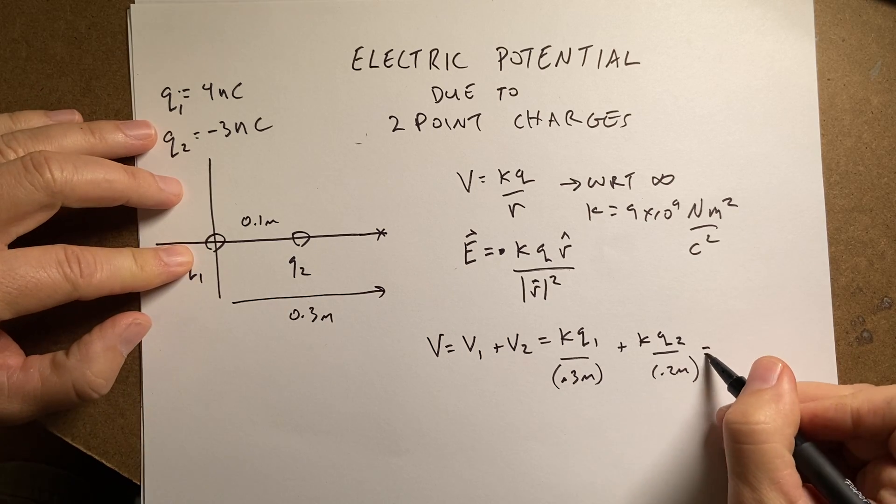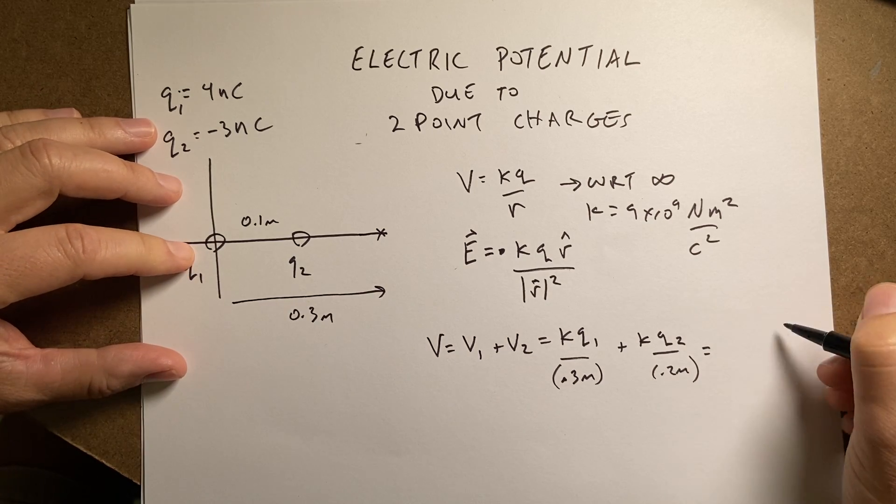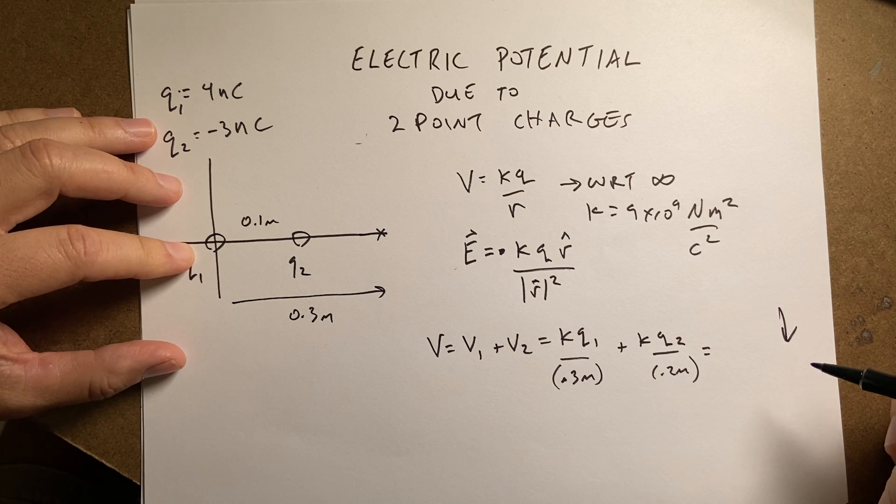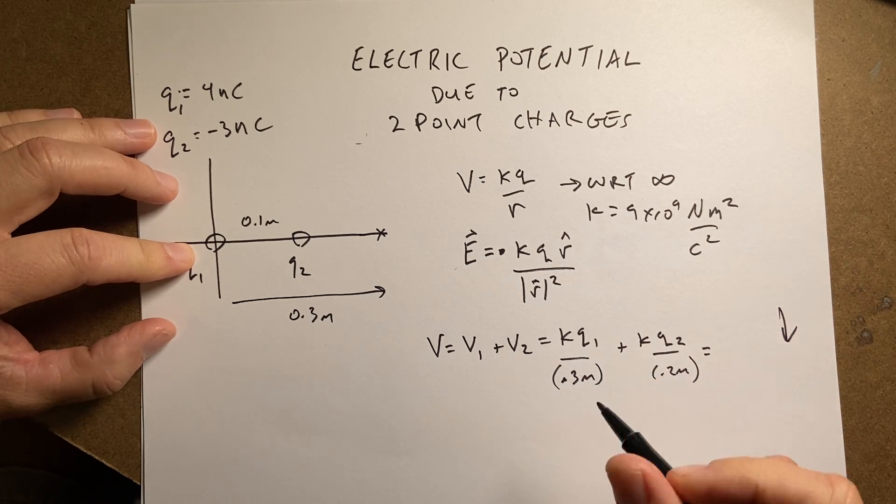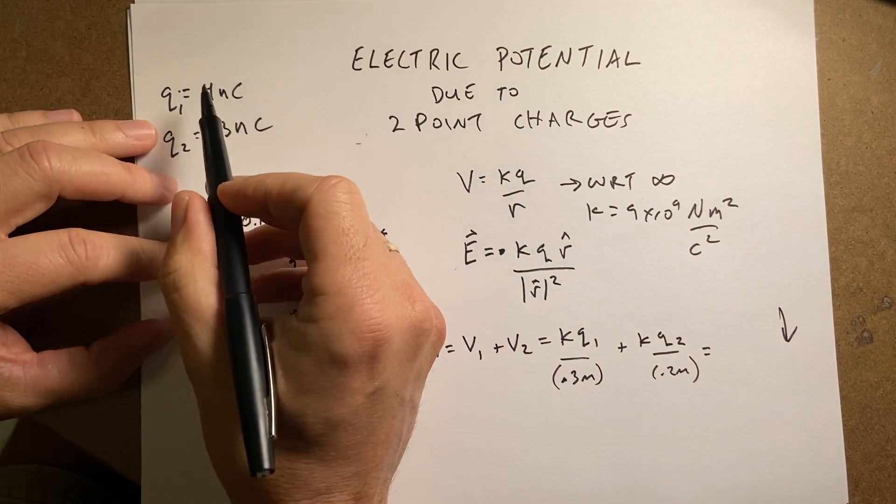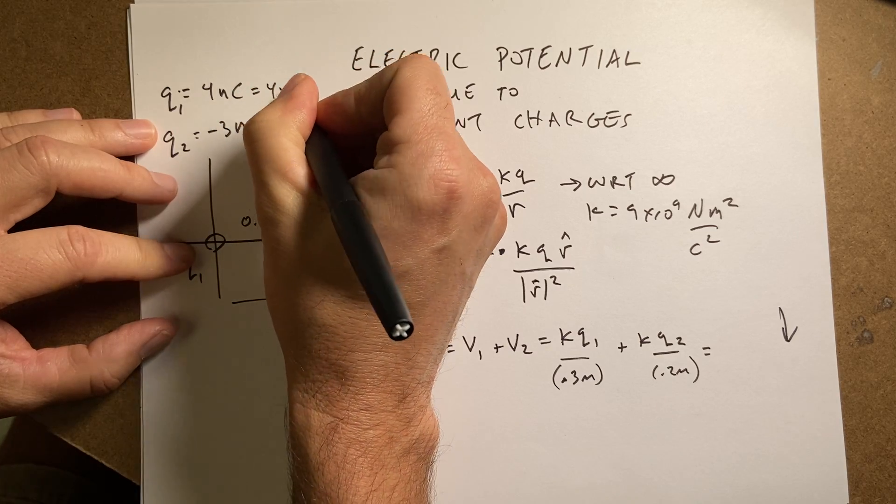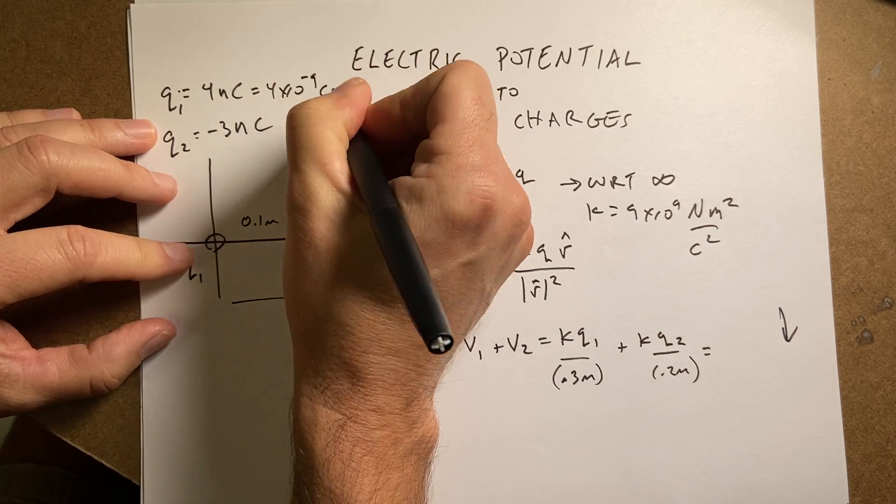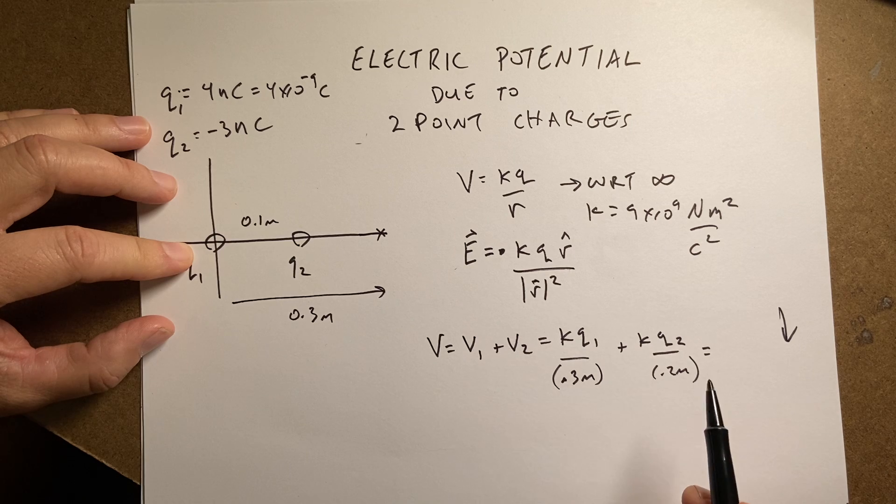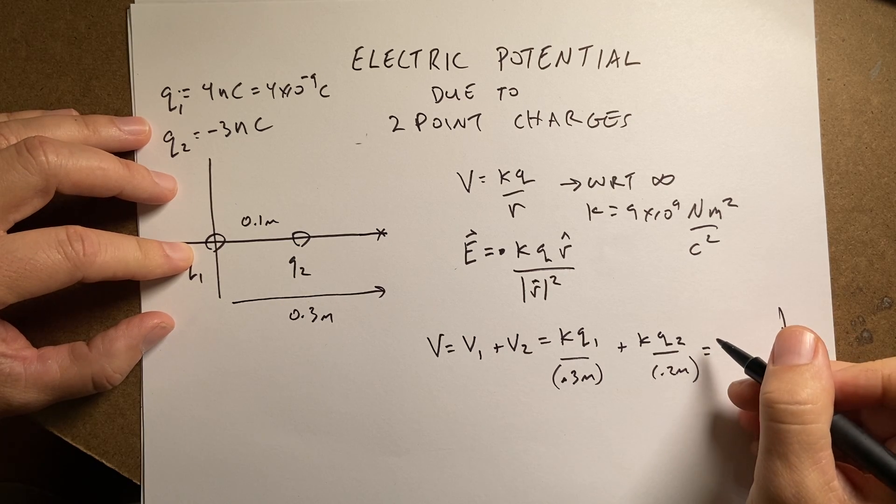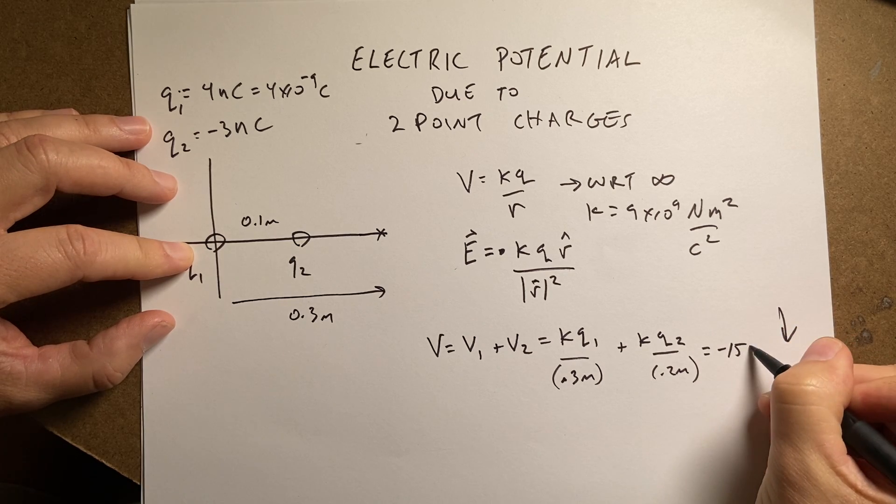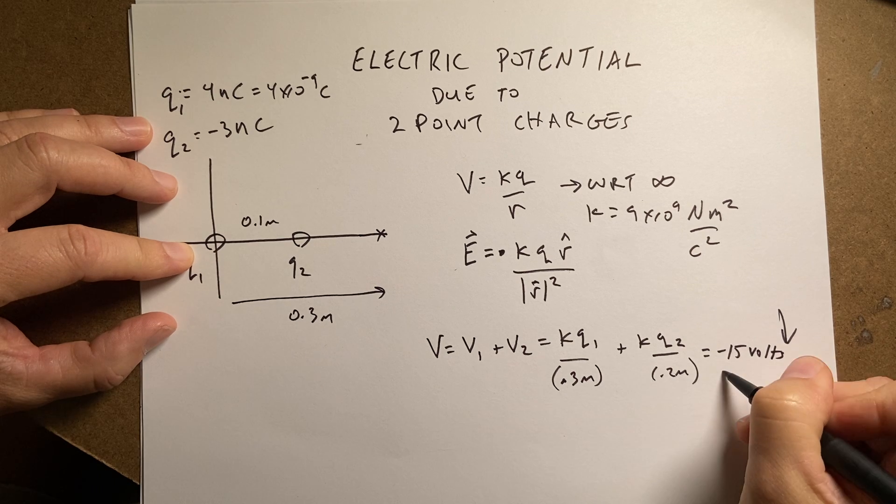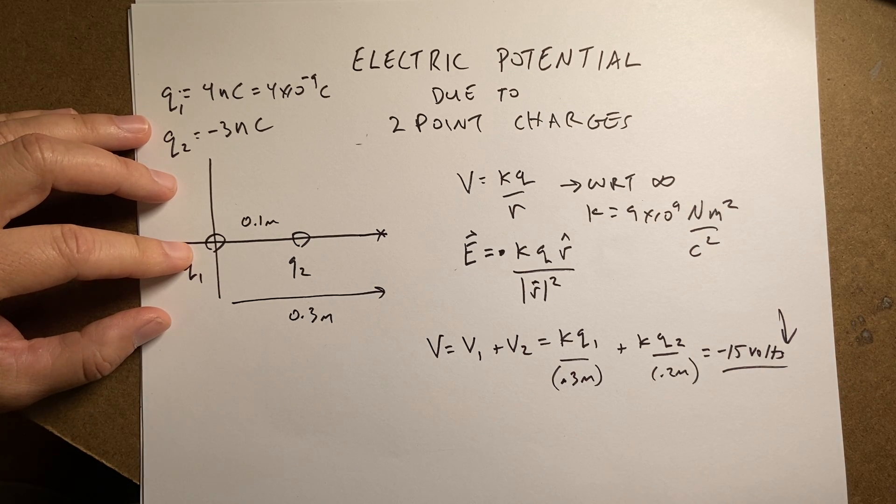And so if you put this in, and I'll give you a link to a code below for my Python calculation of this, but if you put in your value for K, make sure you enter this as 4 times 10 to the negative ninth coulombs, okay, because it's nanocoulombs, then I get negative 15 volts. Pretty simple.